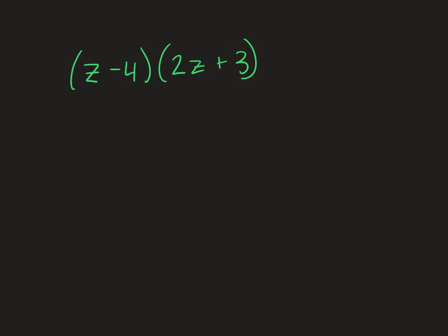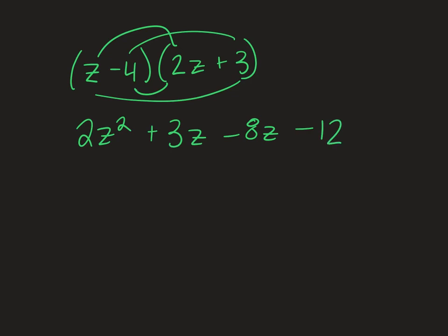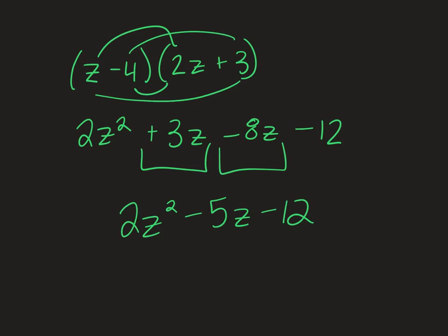We're going to do z times 2z, which is 2z squared. That's our first. Outside is plus 3z. Inside is minus 8z. And last is negative 4 times 3 is negative 12. Then we can combine 3 and negative 8, which gives us a negative 5z in the middle.